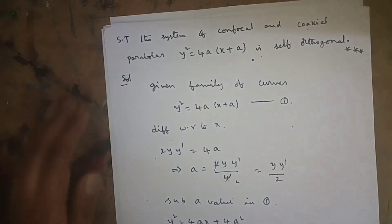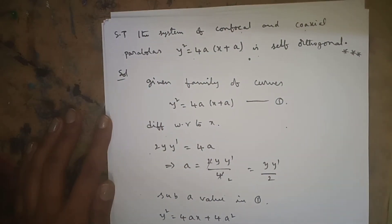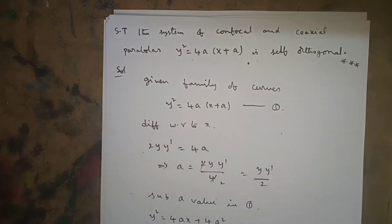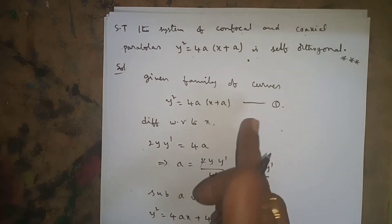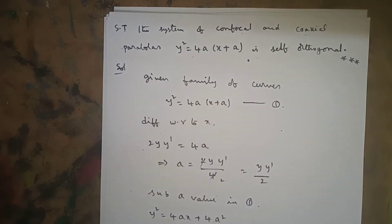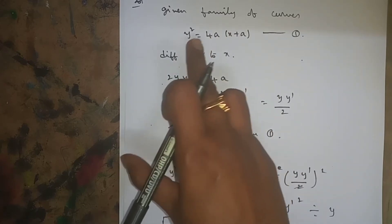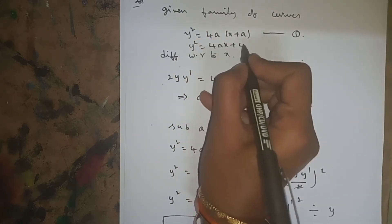Next problem: show that the system of confocal and coaxial parabolas y² = 4a(x + a) is self-orthogonal. This is also a very important, repeatedly asked question. The given family of curves is y² = 4a(x + a). Expanding: y² = 4ax + 4a².